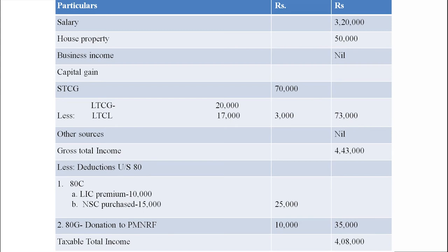There is a capital gain — long term capital gain and long term capital loss — which comes under set-off and carry forward of losses. The long term capital loss can be set off against long term capital gain. So 17,000 rupees will be set off against 20,000, and the remaining long term capital gain is only 3,000 rupees. Short term capital gain is 70,000 rupees. Total capital gain is 73,000. Other sources: nil.